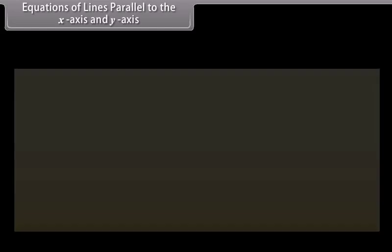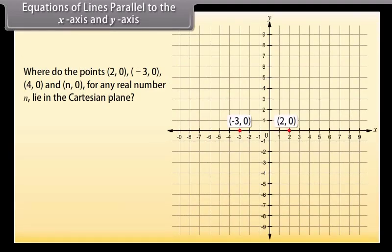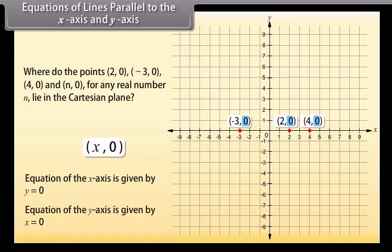Where do the points (2, 0), (−3, 0), (4, 0), and (n, 0) for any real number n lie in the Cartesian plane? They all lie on the x-axis, because on the x-axis the y-coordinate of each point is 0. Every point on the x-axis is of the form (x, 0), so the equation of the x-axis is y is equal to 0. Similarly, the equation of the y-axis is x is equal to 0.